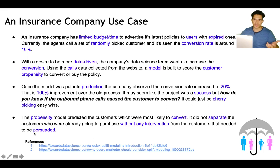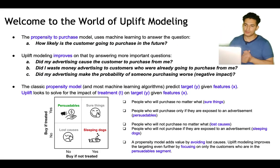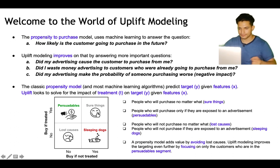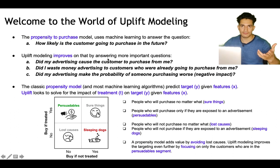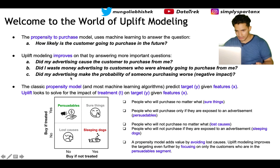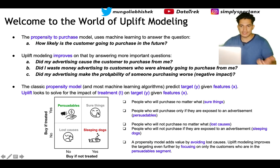Welcome to the world of uplift modeling. The propensity-to-purchase model answers 'How likely is the customer going to purchase in the future?' while uplift modeling improves on that by going one step further and answering: Did my advertising cause the customer to purchase? Did I waste money advertising to customers who were already going to purchase from me? Did my advertising make the probability of someone purchasing worse — that is, the negative impact?